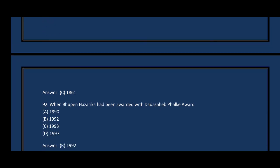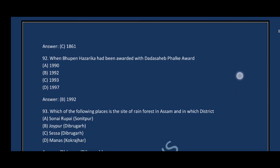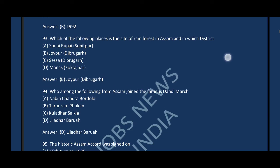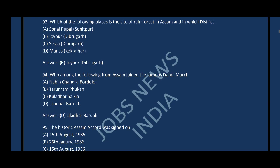Question number ninety-two: When was Bhupen Hazarika awarded the Dadasaheb Phalke Award? The correct answer is option B — 1992. Question number ninety-three: Which of the following places is the site of rainforest in Assam, and in which district? The correct answer is option B — Joypur, Dibrugarh.